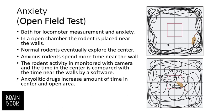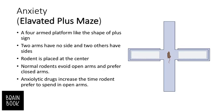The time in the center is compared with the time near the walls using software. We can determine which mouse is more anxious. Using anxiolytic drugs increases the amount of time spent in the center and open area — for example, if an animal consumes anxiolytic drugs, the time in the center will be increased. This is the open field test.